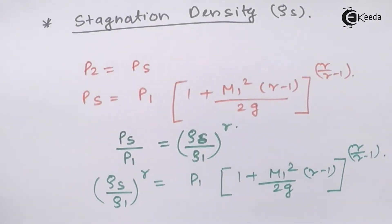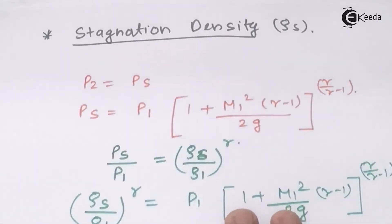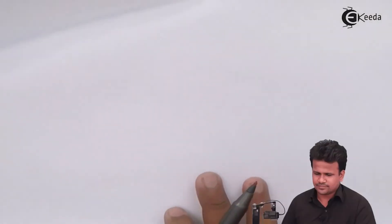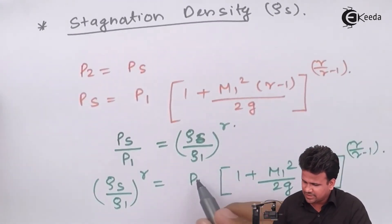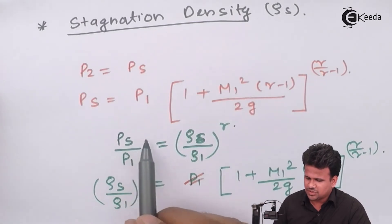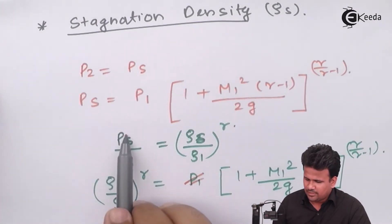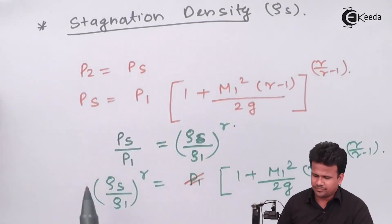Let us take 1 upon gamma root on both sides. What do we get? We need to correct this part because we have substituted PS upon P1.